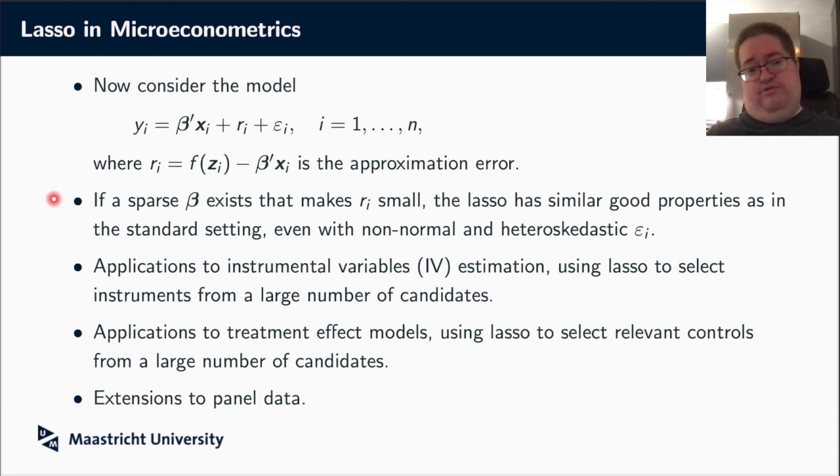Of course, you still need to argue that this is a good approximation, but that is something that, depending on the application and your economic model that you have, you can do. But if we assume that it is indeed a reasonable approximation, then non-normality, heteroskedasticity, they actually do not affect the lasso.